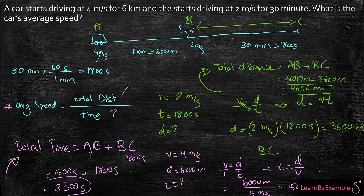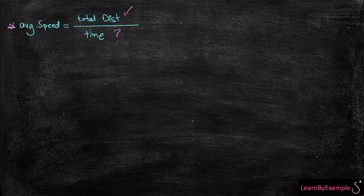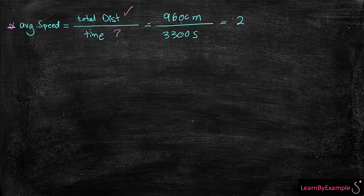Now I have my total time and total distance, so I can plug them into my average speed equation. My total distance is 9,600 meters and my total time is 3,300 seconds. Dividing these two numbers gives me 2.91 meters per second. So that is my average speed for this question.